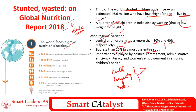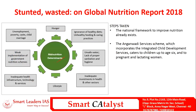This disparity can be attributed to political commitment, administrative efficiency, literacy, and women's empowerment in ensuring children's health, especially in the southern region, which is lacking in the north. The determinants of malnutrition include hunger, ignorance of healthy diets, unsafe and unclean water, inadequate investment in health, changing lifestyles, inadequate health infrastructure, technology and services accessibility, weak implementation of government nutrition schemes, unemployment, poverty, and other social issues.